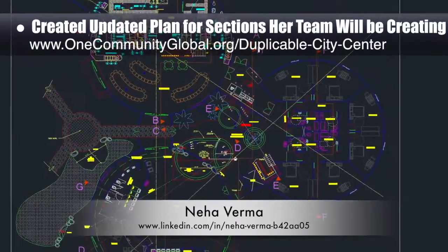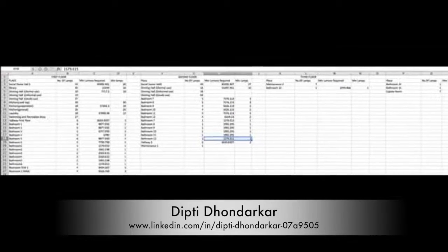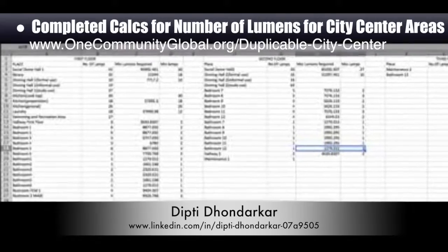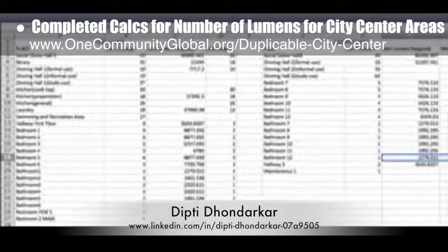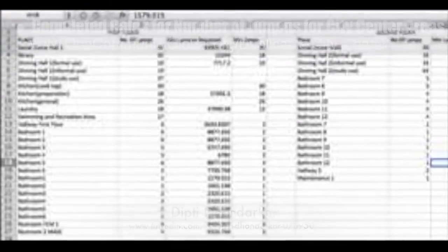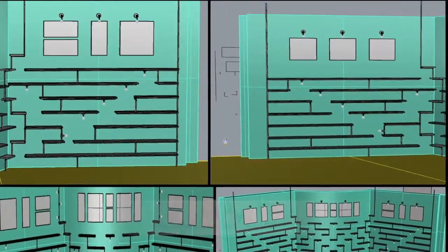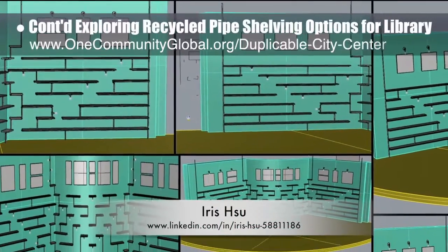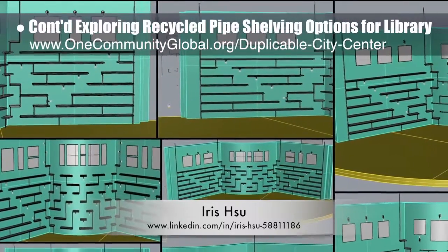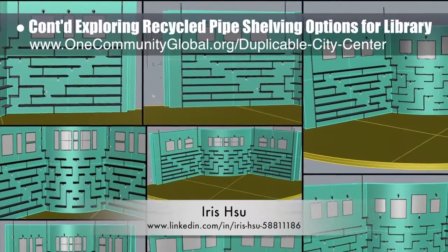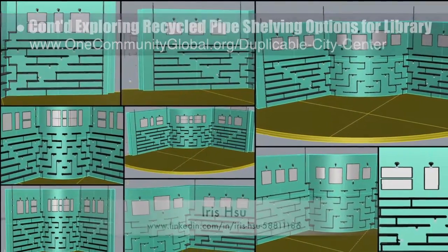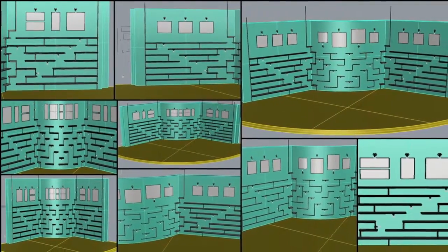Neha Verma, construction project manager and Bachelor of Architecture, created an updated plan for the sections her team will be working on. Dipty Don Darker, electrical engineer, completed calculations for the minimum number of lumens for each of the different city center areas. Ira Sue, industrial designer, continued exploring recycled pipe shelving options for the duplicable city center library — this is round nine of the work, exploring additional shelving and lighting designs for the main wall spaces along with art options.